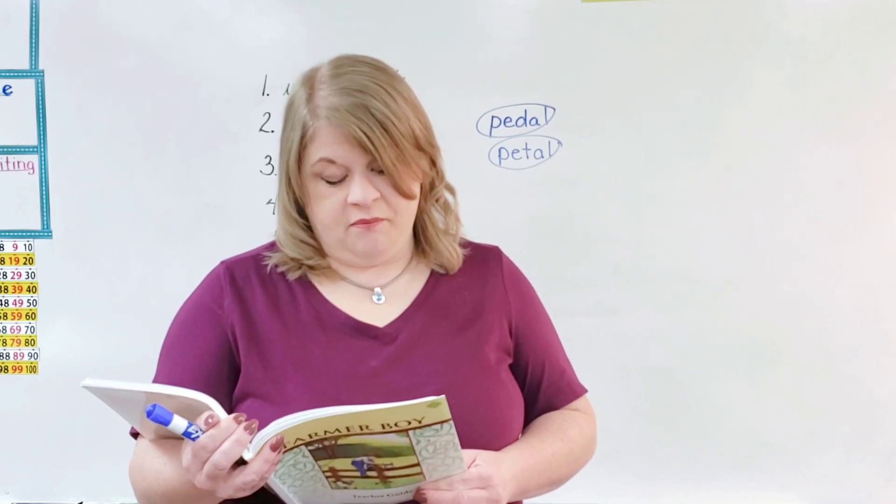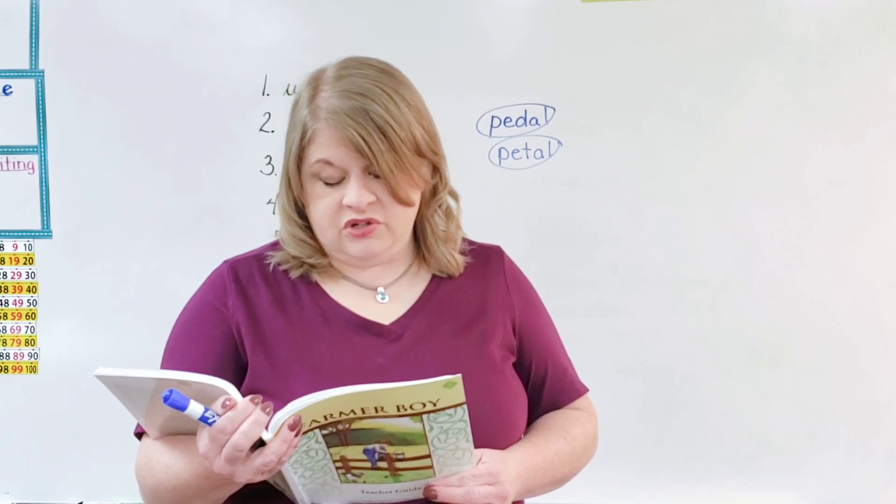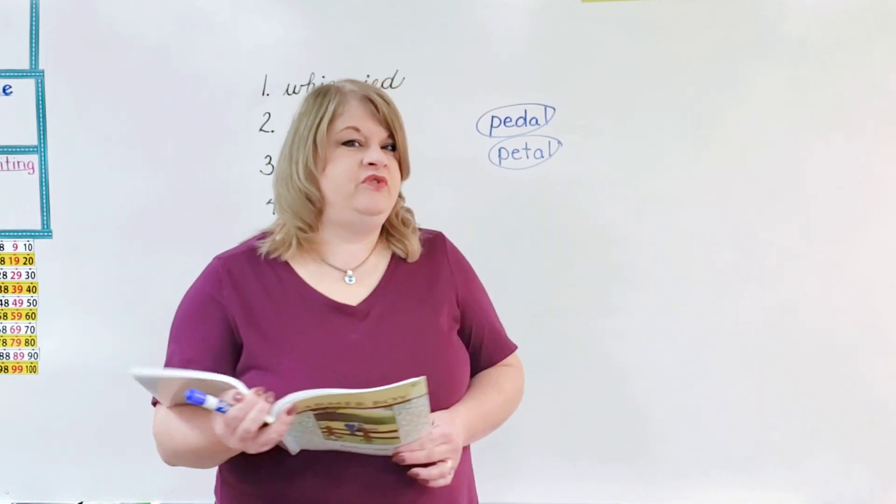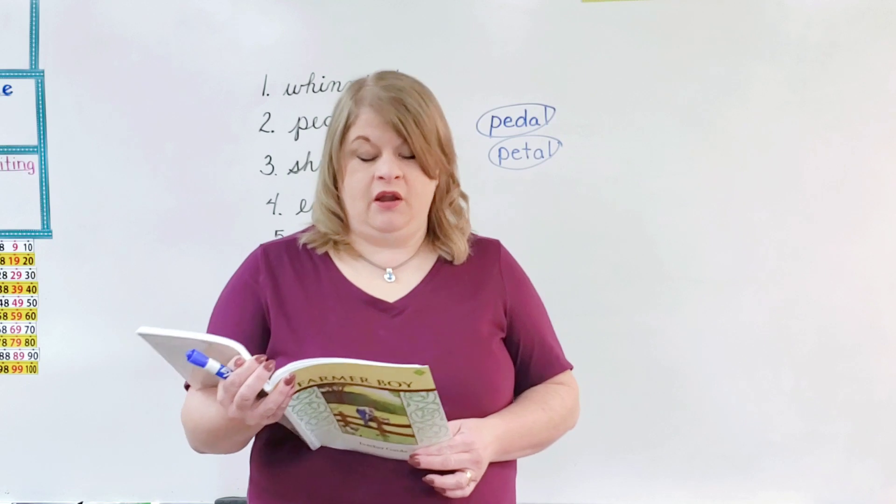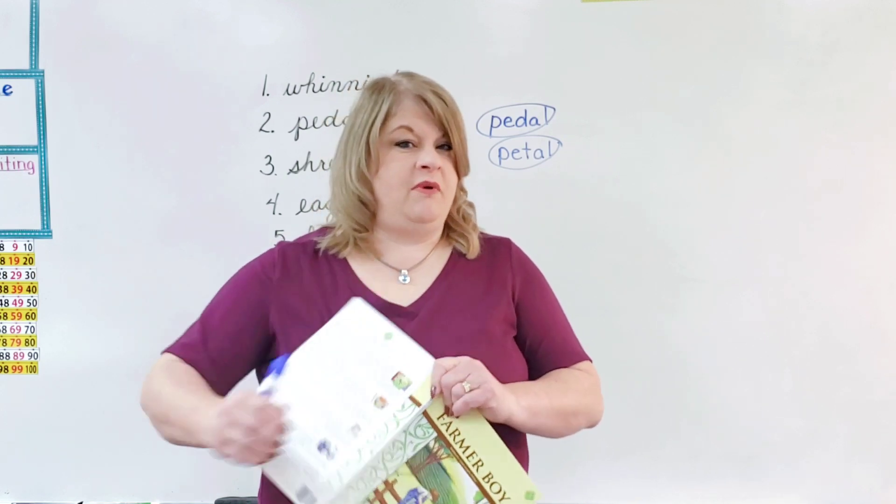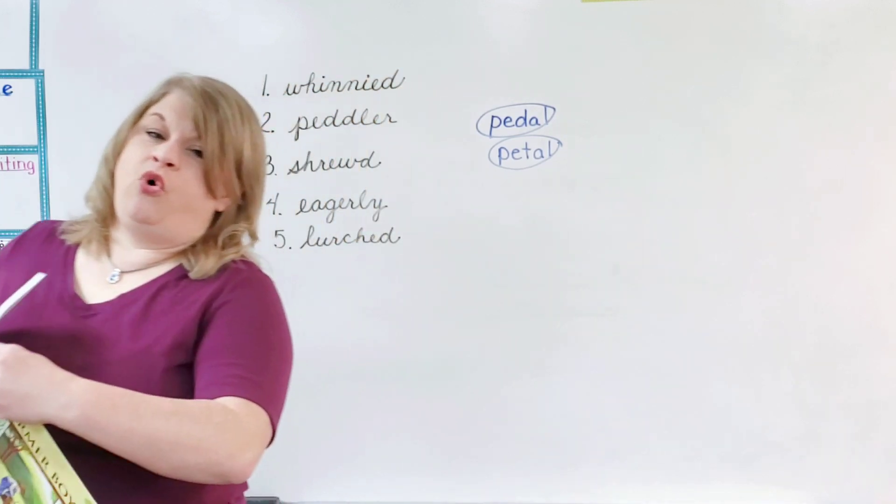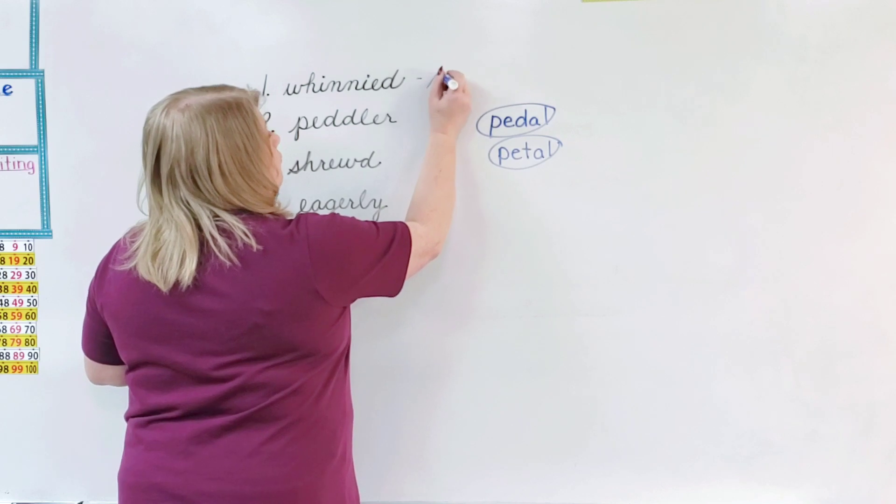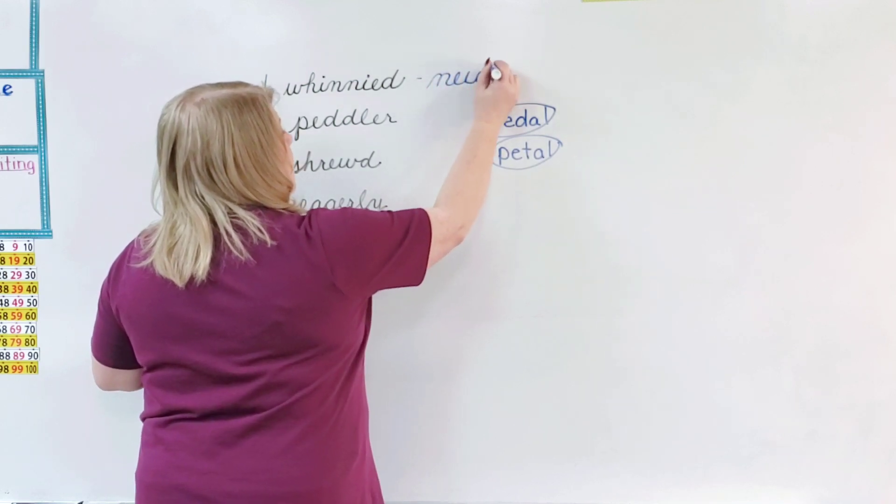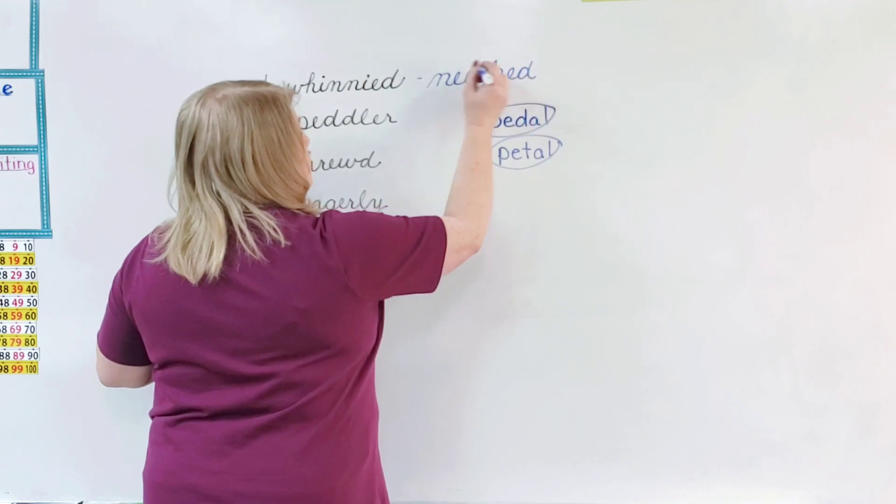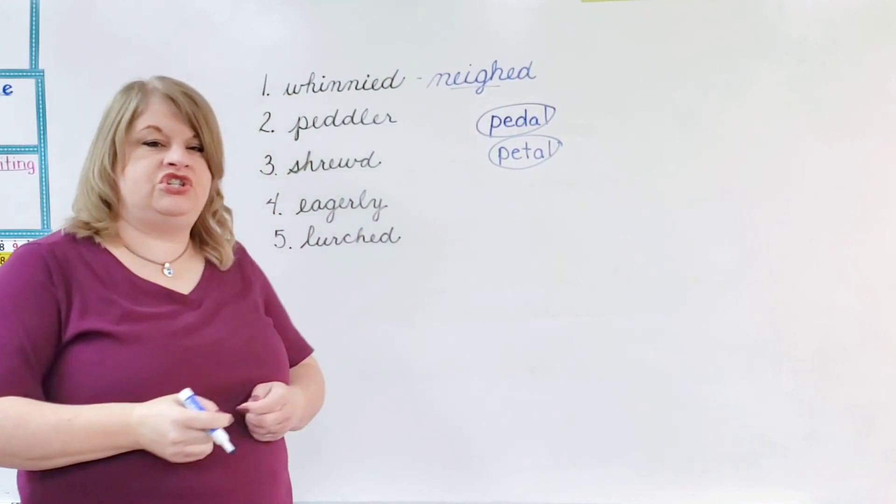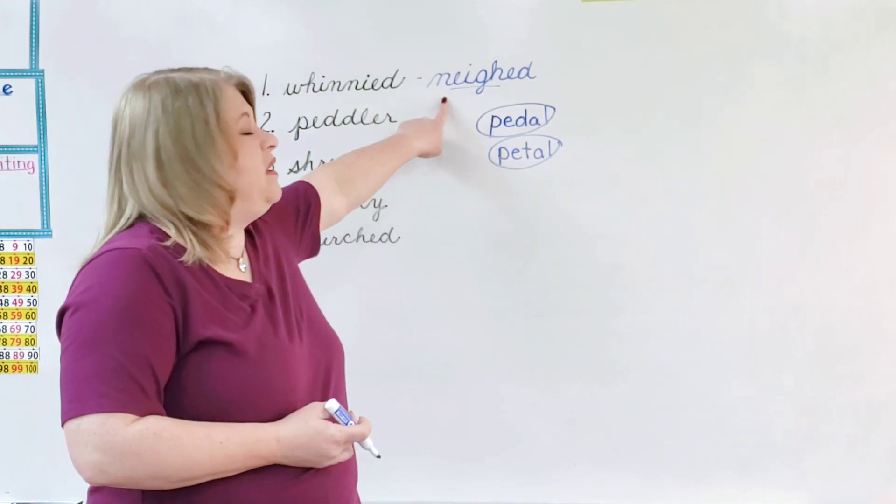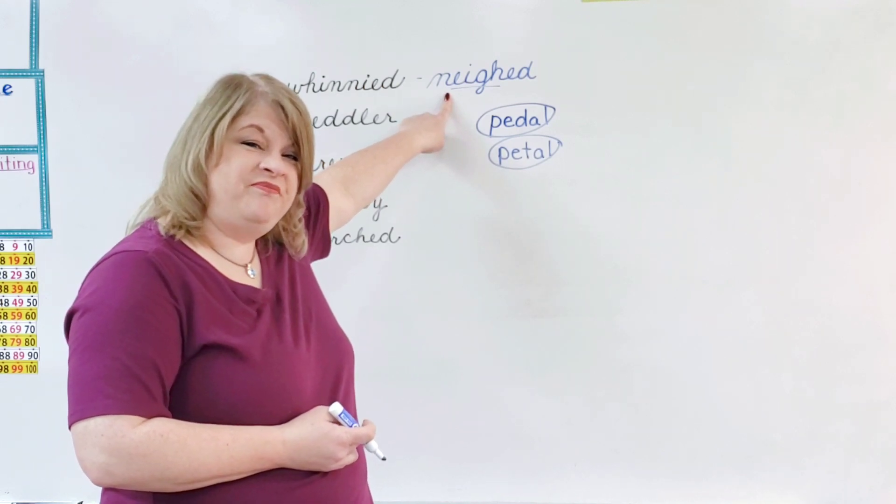Let's look at the vocabulary. Number one, the young horses whinnied to the big white horse. Whinnied. Any ideas on what that is? Some of you like to do stuff with horses. What does it mean if they whinnied? That means the horse neighed. Now watch how this is spelled. N-E-I-G-H-E-D. This is one of those words that has the E-I-G-H. We've talked about that before. Here the E-I-G-H says A.